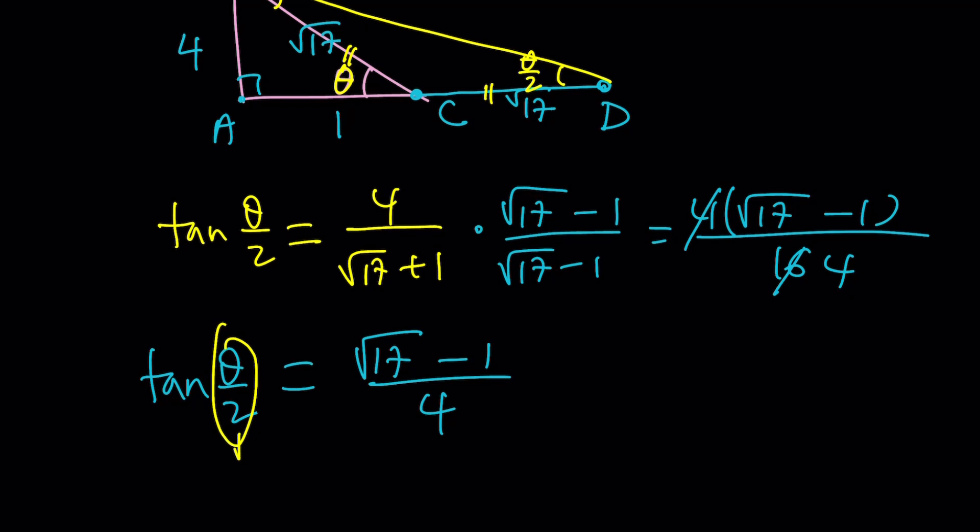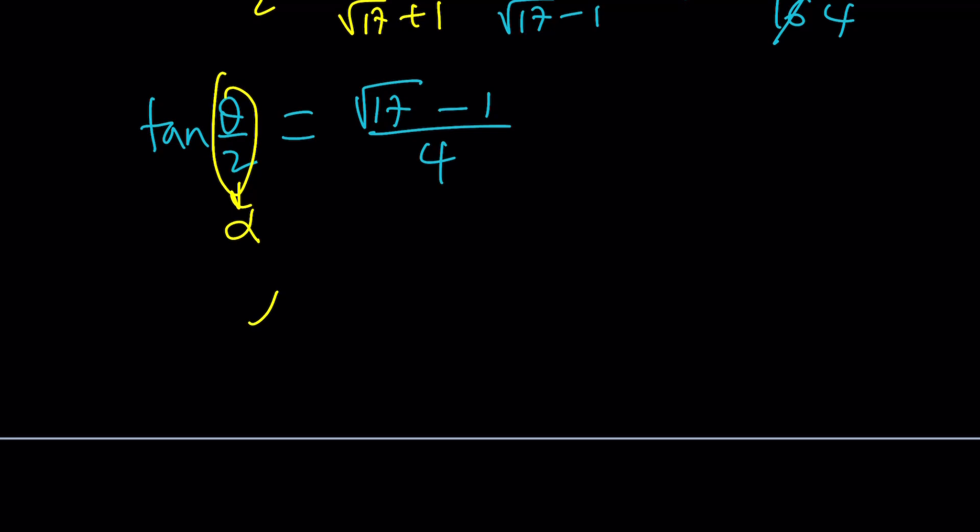So tangent theta over 2 is going to be this one, which is basically the argument for the square root. So we got the tangent, but how do you find the angle from here? If you call this alpha, how do you find alpha? You must use arc tangent. Make sense?